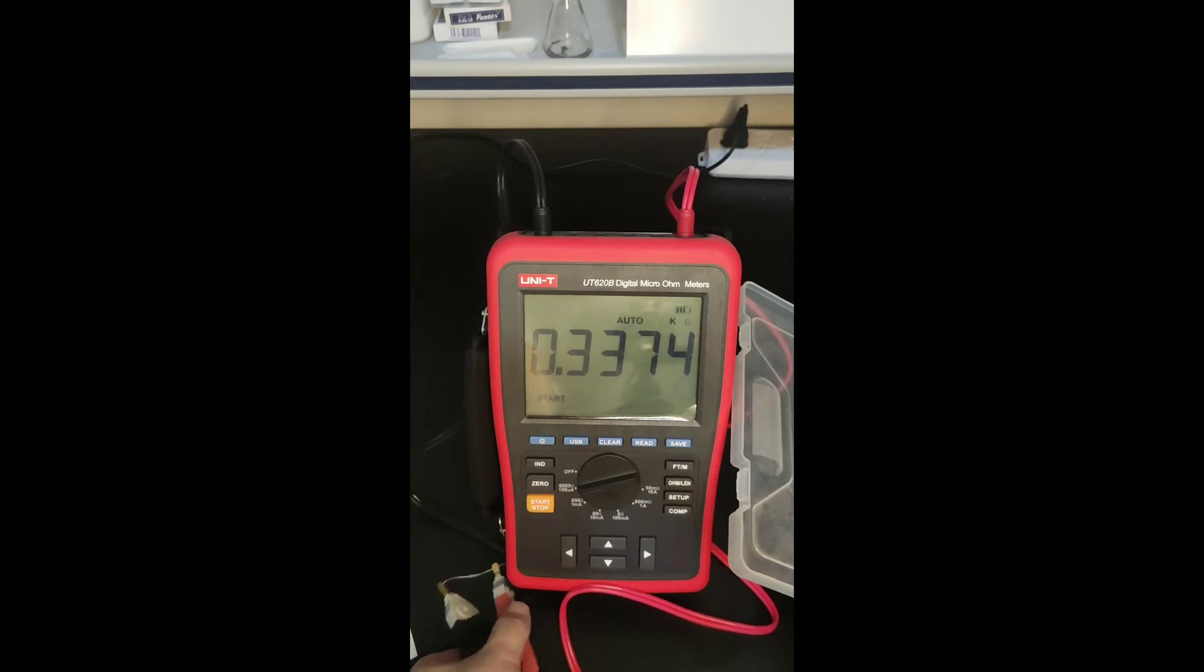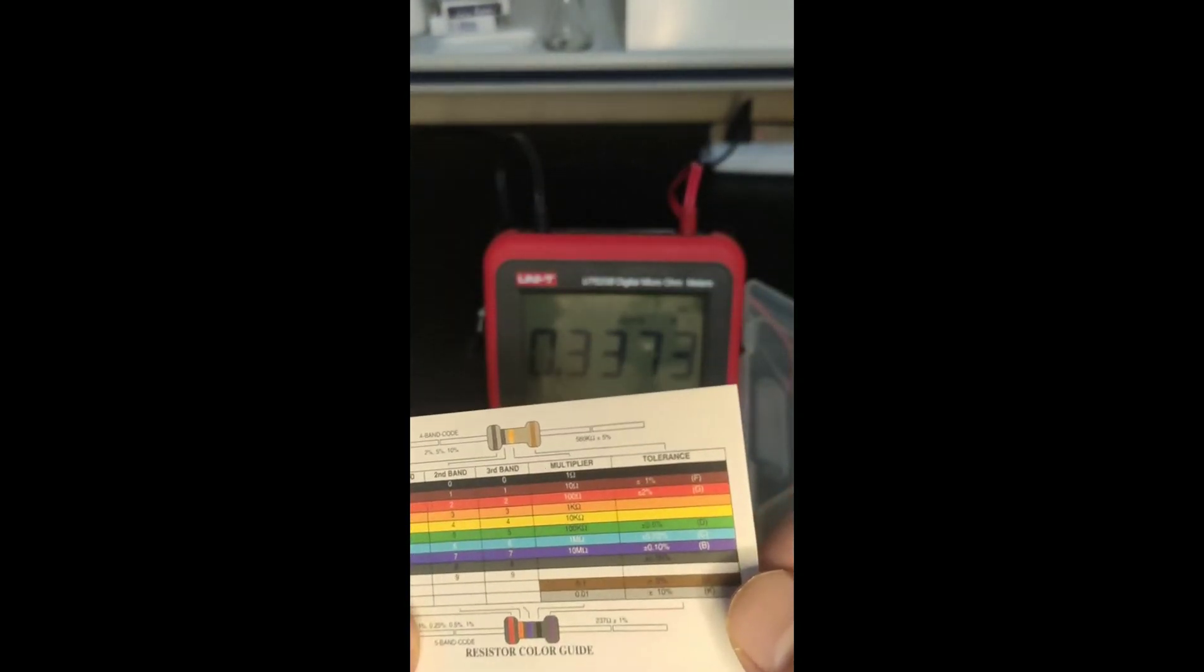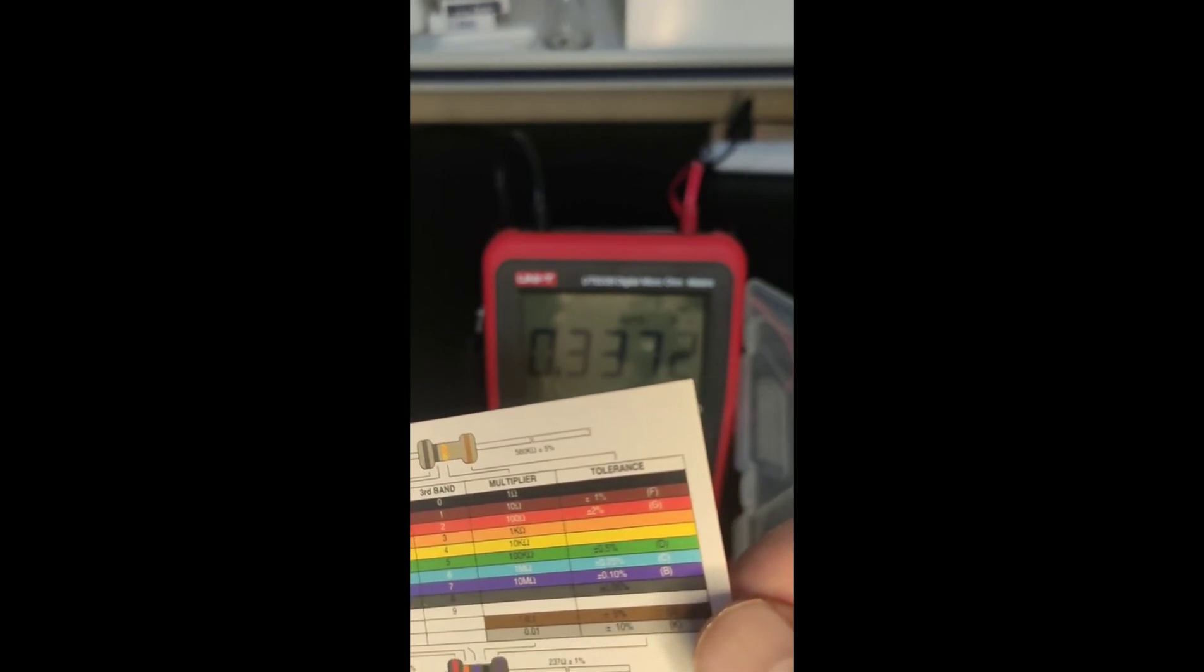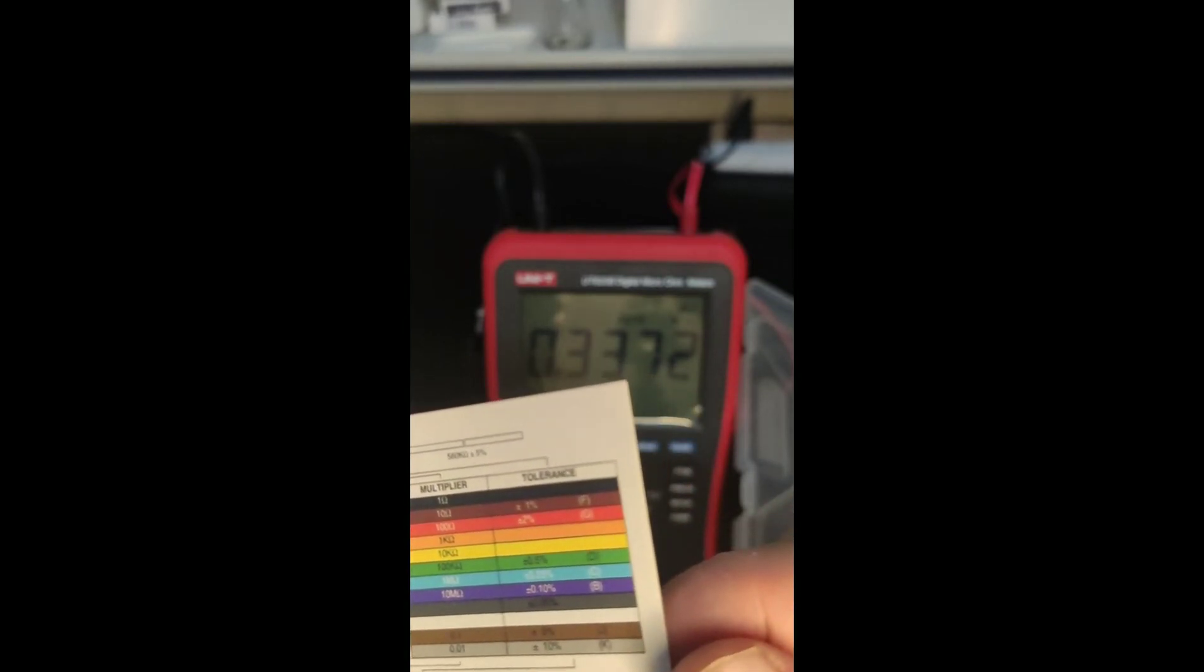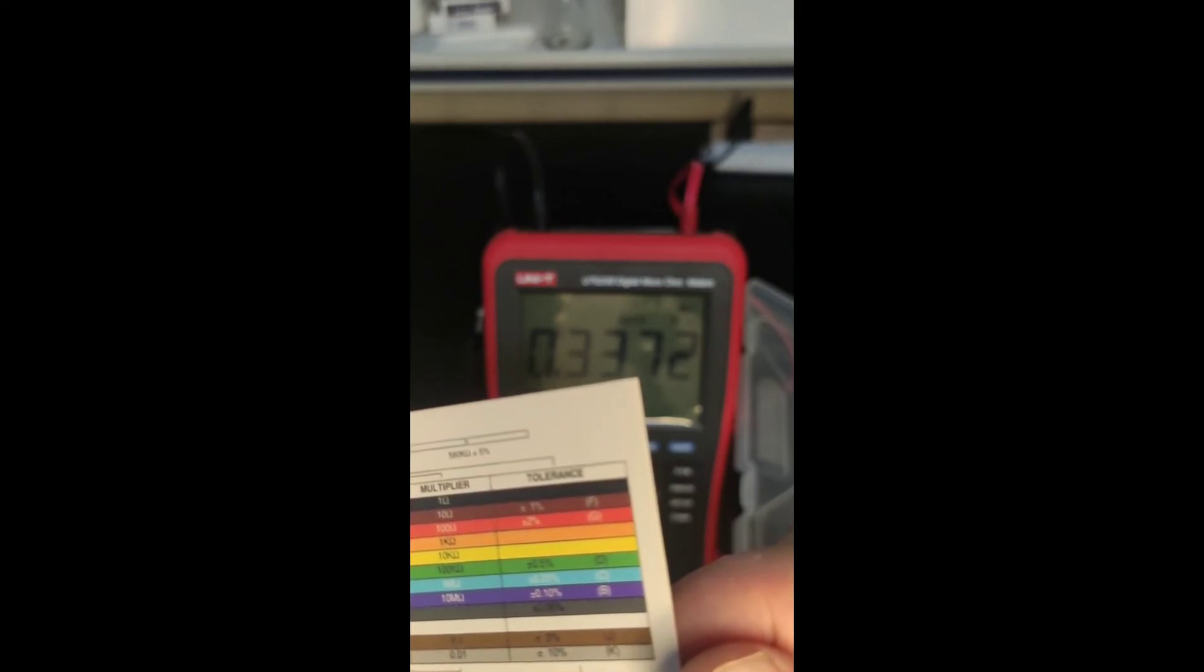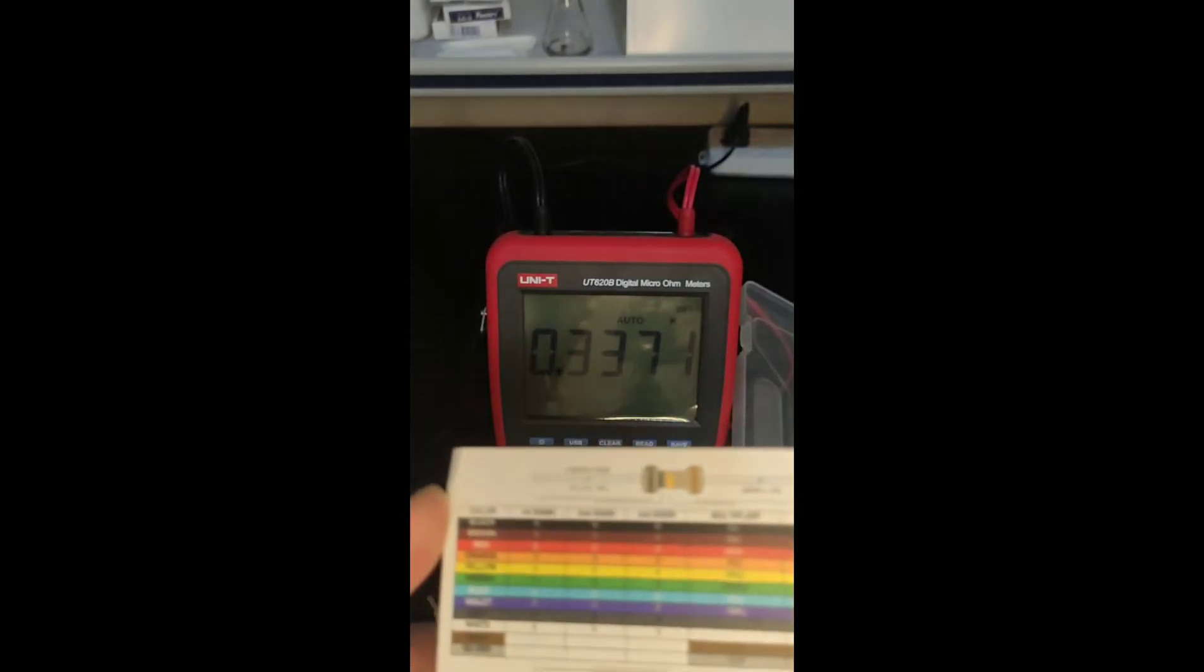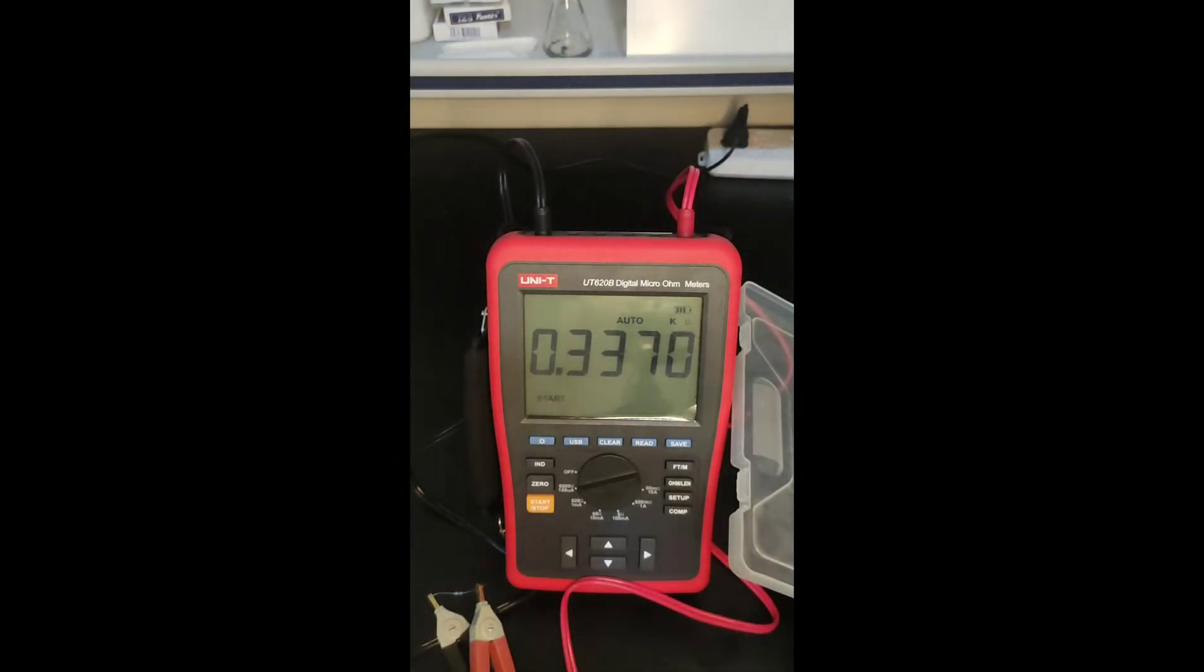Just now as our reading. As our reading. It is 330 ohm. And the tolerance is plus, plus, minus ten percent. Ten percent. And the data is quite accurate. Comparing with wrist reading. So we can see that this machine is working well.